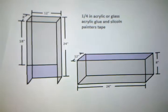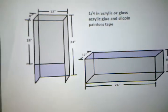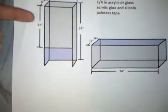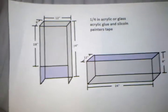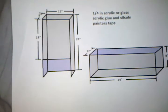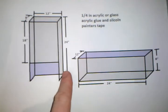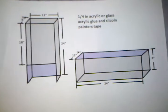12 inches on the top, 8 inches wide. Front piece of glass is 18 by 12. Then the side pieces are 24 by 8.